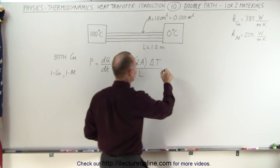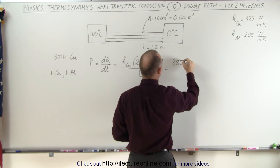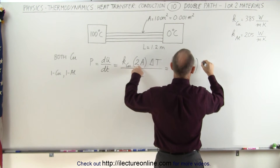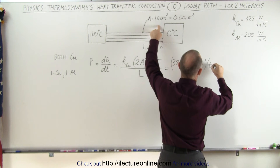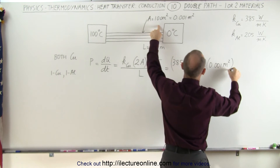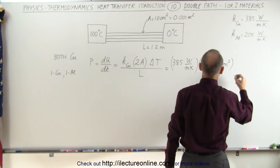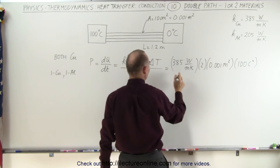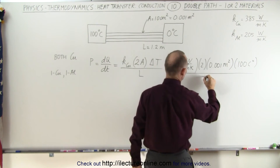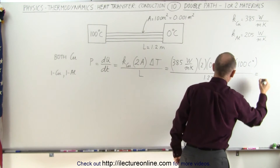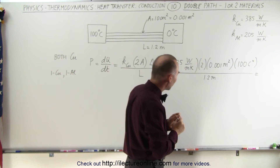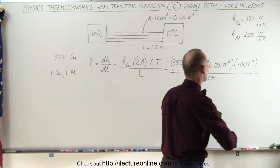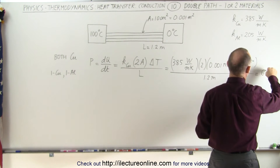When we plug in the numbers, we get the following: 385 watts per meter times Kelvin. Now we have twice that, so times two for cross-sectional area, 0.001 meter squared, and the difference in temperature is 100 centigrade degrees — the same size as Kelvin degrees — and then divide the whole thing by 1.2 meters. The result is now twice what we had in the previous video: 32 watts becomes 64 watts.